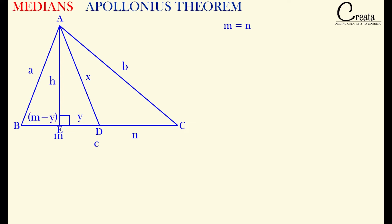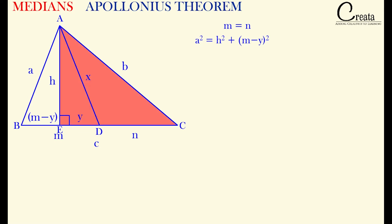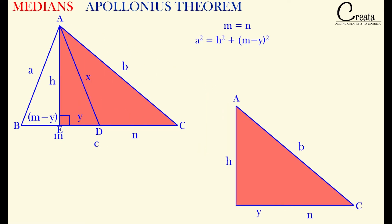If we take triangle ABE and apply the Pythagorean theorem, we get: a² = h² + (m − y)². Further, if we take triangle AEC, we get: b² = h² + (n + y)².